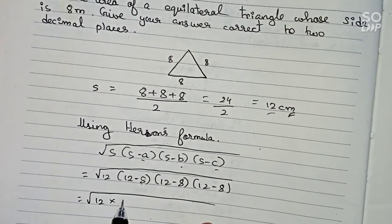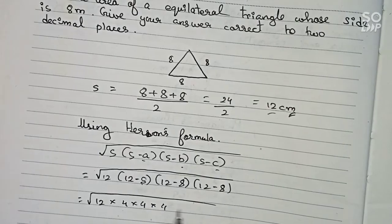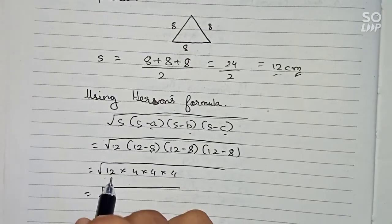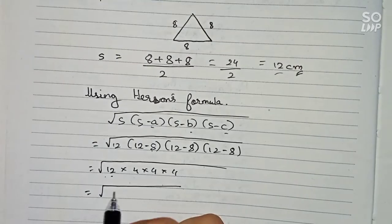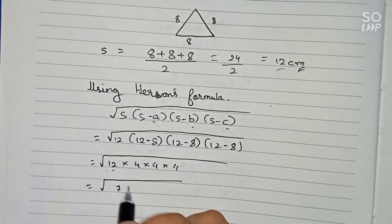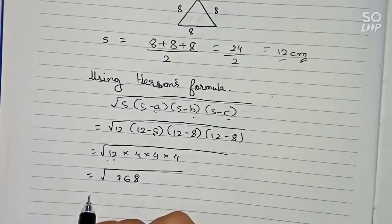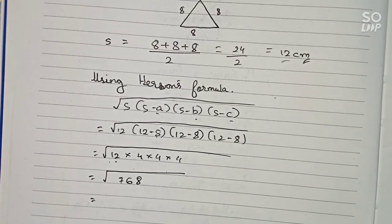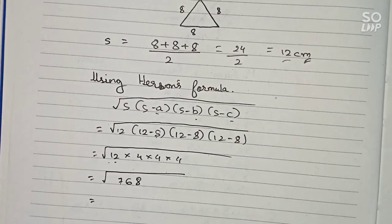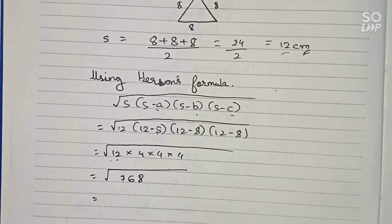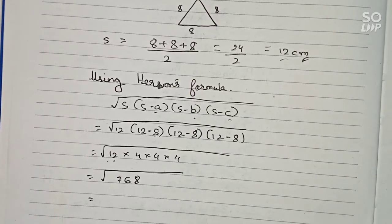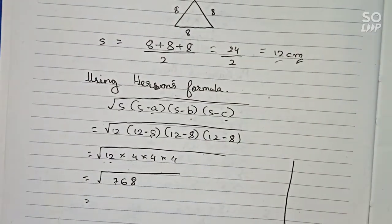So we get: root of 12 multiplied by 4, multiplied by 4, multiplied by 4, which equals the square root of 768. Since the question requires the answer correct to two decimal places, it is clear that the answer will have a decimal point. So instead of prime factorization, we will use the square root long division method.